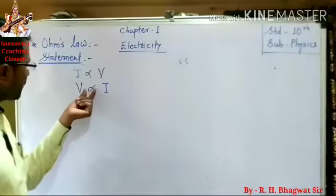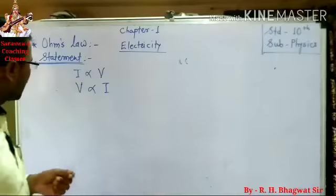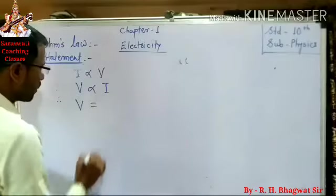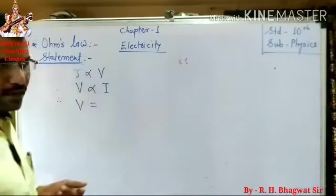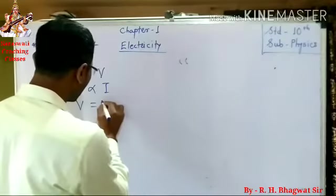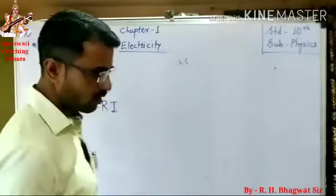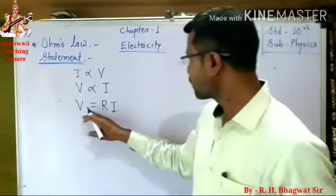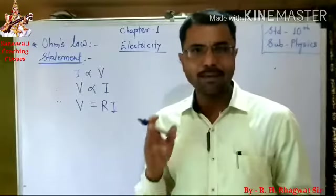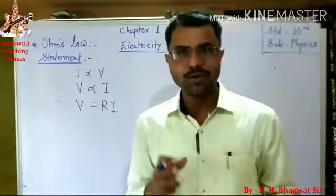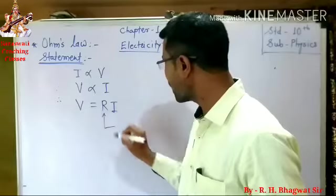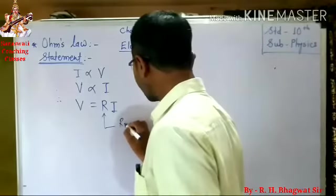Now, we have to remove this proportionality sign. Therefore, we can write V is equal to R into I, where R is the proportionality constant. V is the potential difference applied across the conductor, I is the current flowing through that conductor, and this capital R is known as the resistance of the conductor.